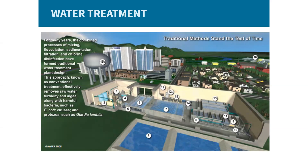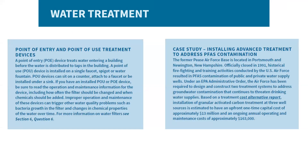Public water systems using groundwater are often required by state authorities to disinfect their water as a public health safeguard, and do not often require the same treatment as those systems using surface water. Depending on water quality issues, water systems may add a range of additional treatment technologies, usually at higher costs, to meet drinking water standards. This is often done in response to specific contaminants of concern, poor water quality, and regulatory requirements.